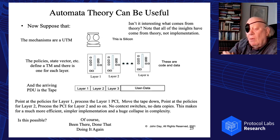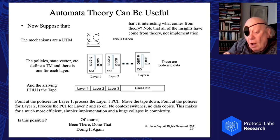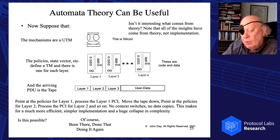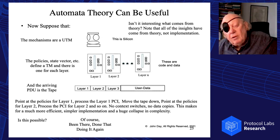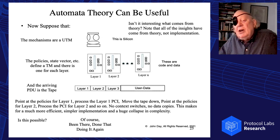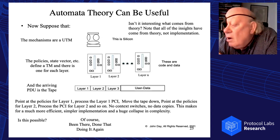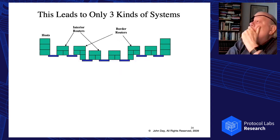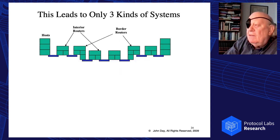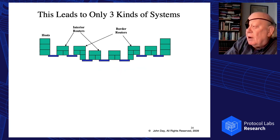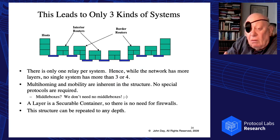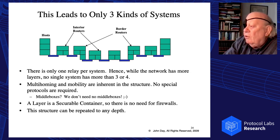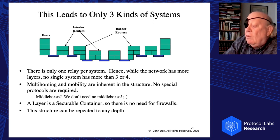You can put the universal Turing machine in silicon, and the policies are code and data. We actually did an operating system like this in the late 70s — we know this works. Almost all of these results have come from the theory, not from the implementation. This leads to a system where we only need three kinds of boxes. A layer turns out to be a securable container, and we can repeat this structure to any depth.